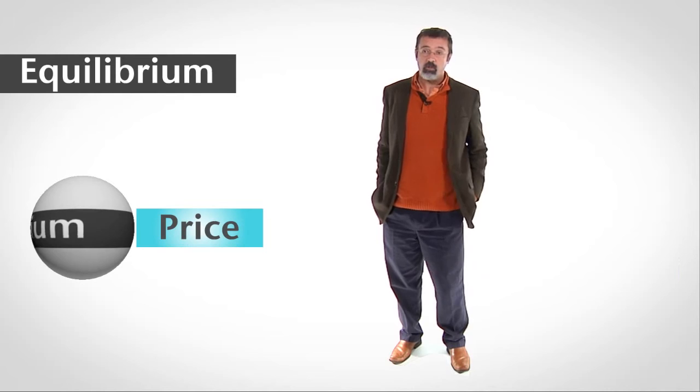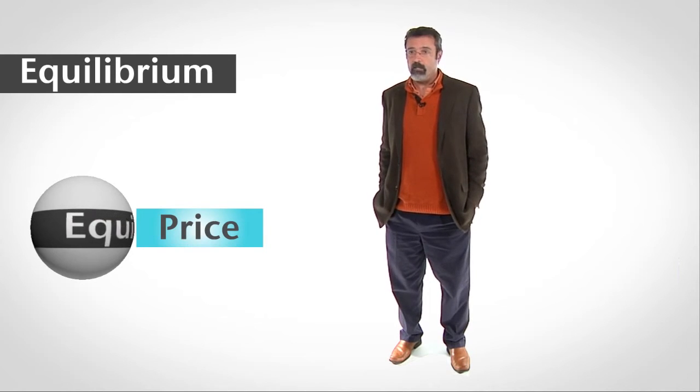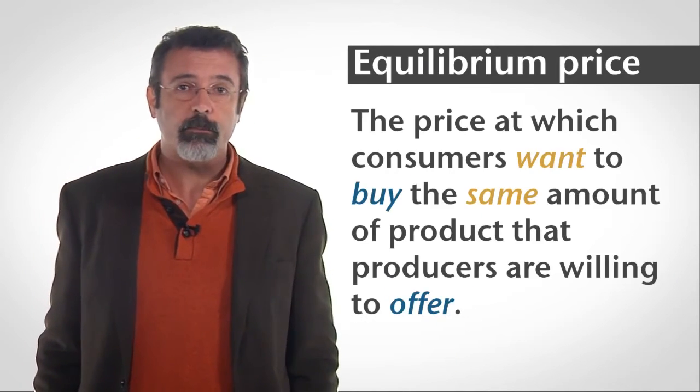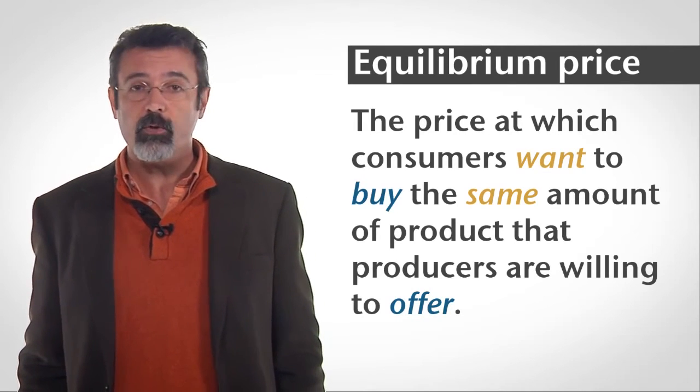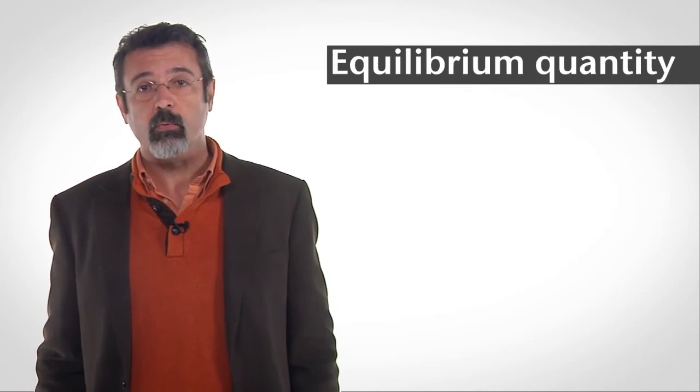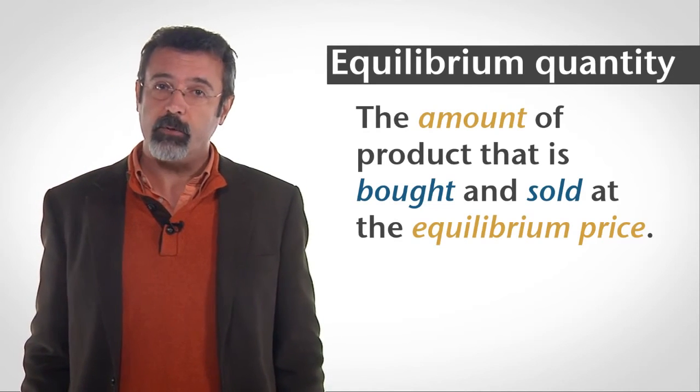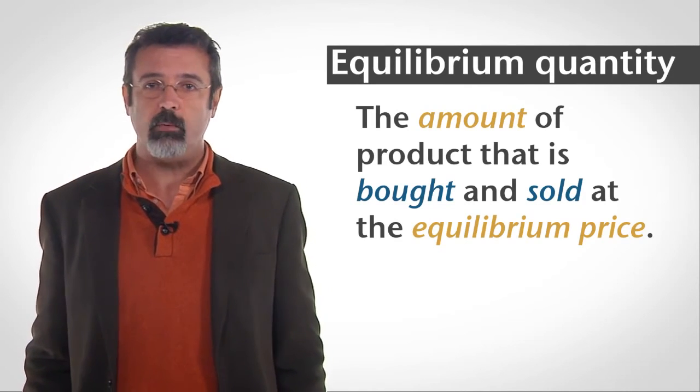When there's no shortage and no surplus, we have equilibrium. The equilibrium price is the price at which consumers want to buy the same amount of product that producers are willing to offer. The equilibrium quantity is the amount of product that is bought and sold at the equilibrium price.